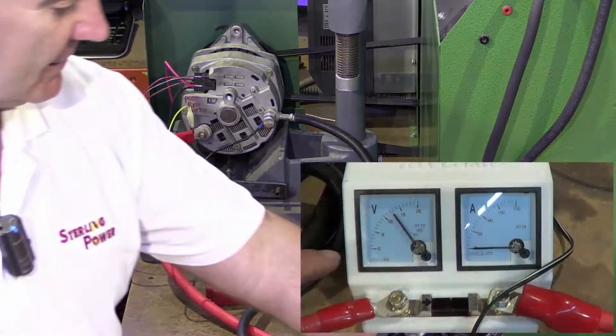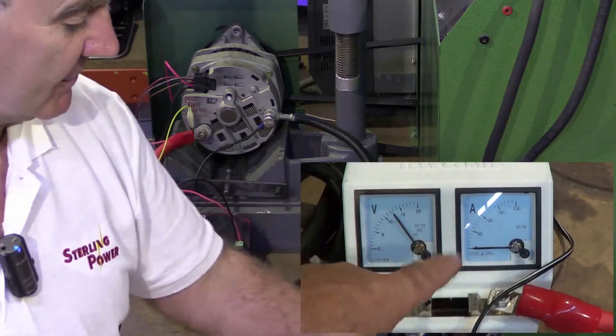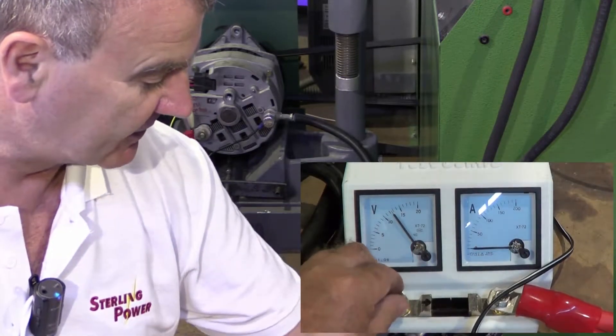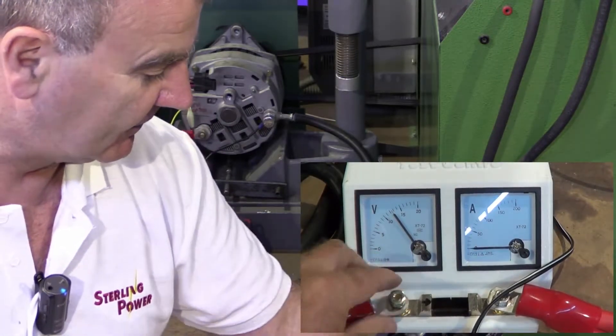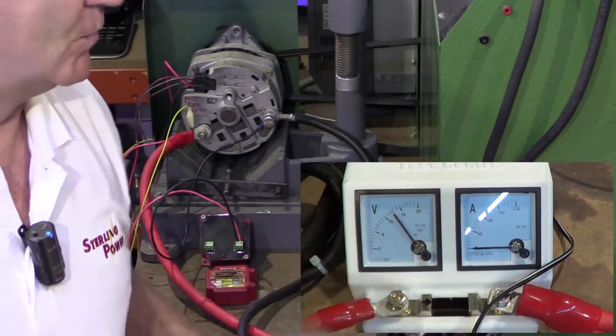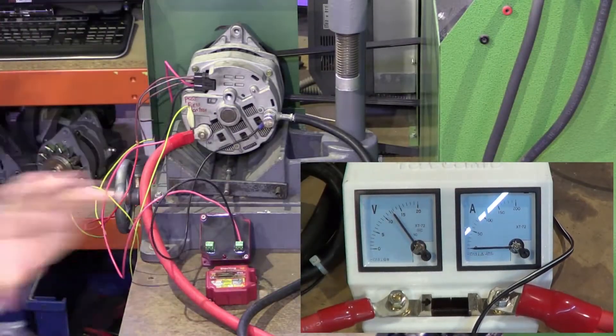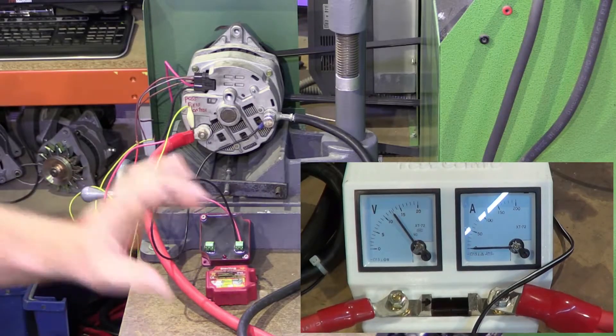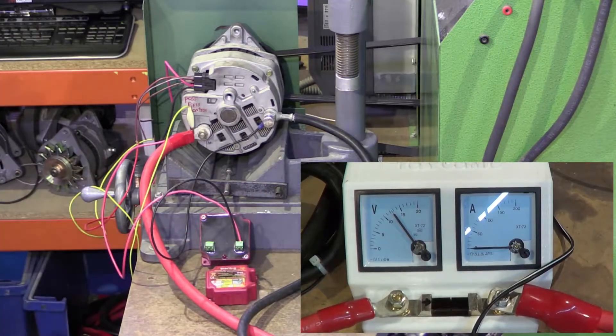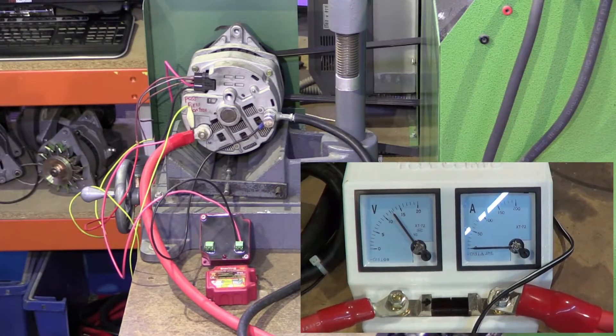Then over here we have the amps and the volts. So what we're going to do is I'm going to loosen this with my finger so that I can undo this with the alternator working, just to prove that the unit works. I'm going to fire the test bench up now and then when it's running I'm going to disconnect the positive when it's on full current.